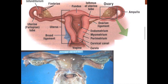The uterus itself has three different layers: the endometrium, which is the glandular portion; the myometrium, which is muscle; and the perimetrium, which is the connective tissue capsule around the entire structure. Later on we'll talk about the cervix and the vagina.